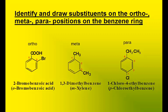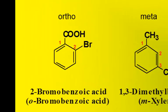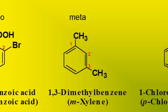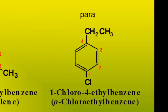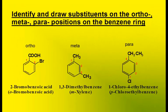This slide describes the three ways two groups can be oriented on a benzene ring: adjacent to one another, which is called ortho; one carbon away, which is called meta; and two carbons away, which is called para. You're not responsible for memorizing any of these names on the screen, but I do want you to recognize if two groups bonded to a benzene ring are positioned ortho, meta, or para.